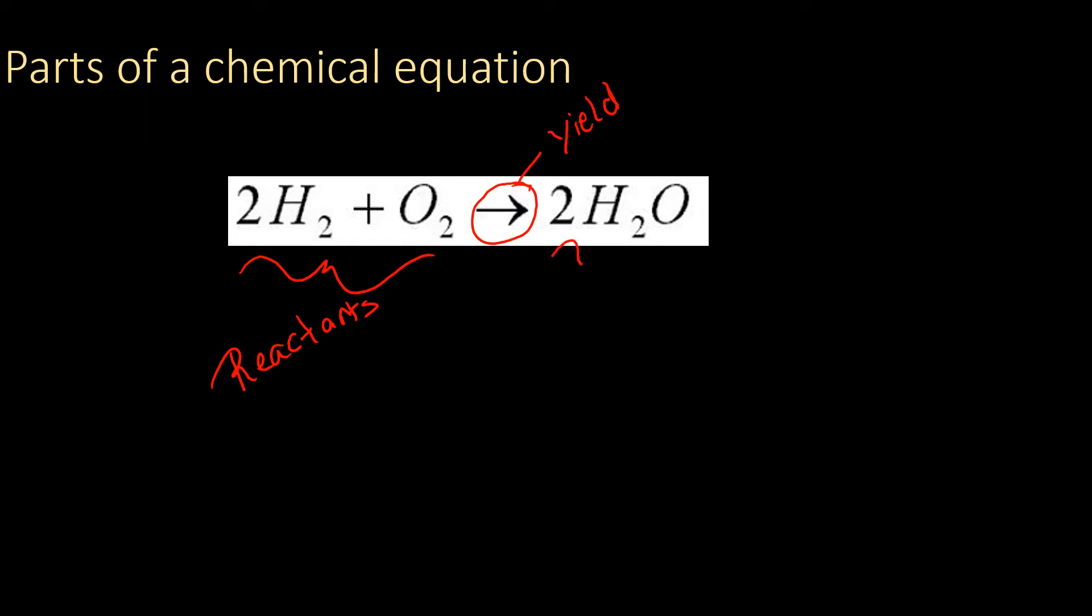And on the right side we have our products. So the way you would read this is two hydrogen plus one oxygen yields two H2O's. This is a coefficient. So just like in math, that two in front of it tells me I have two of that molecule. So I have two hydrogen molecules and two water molecules.